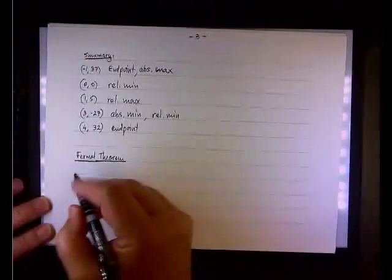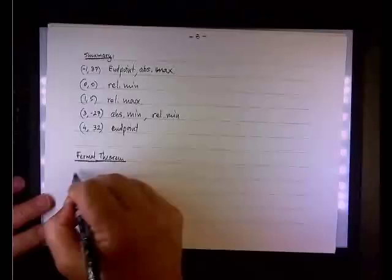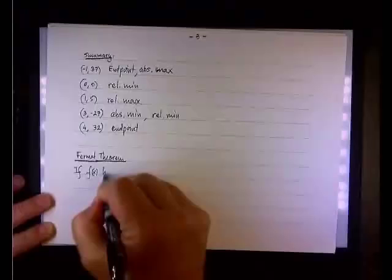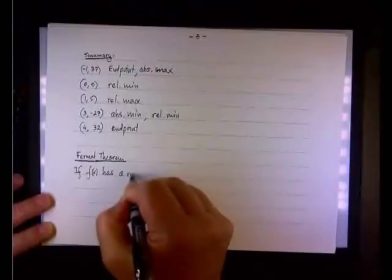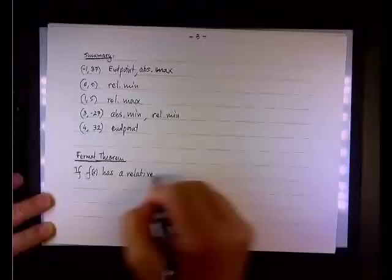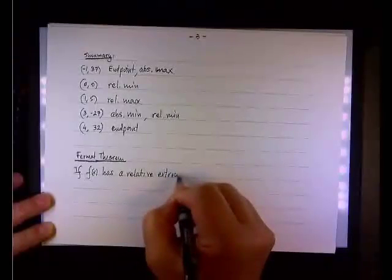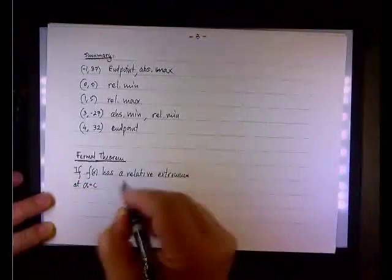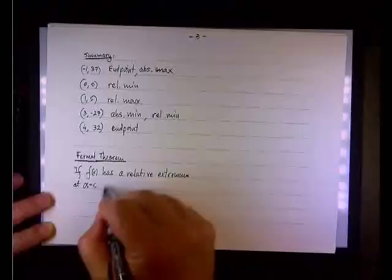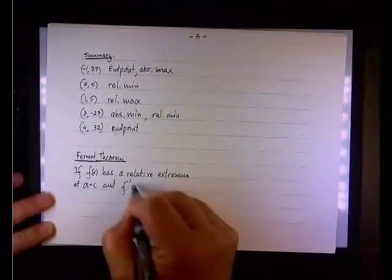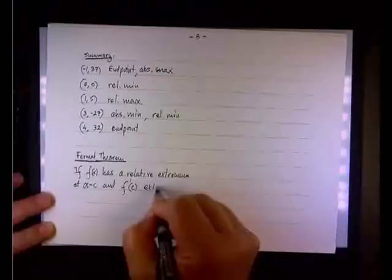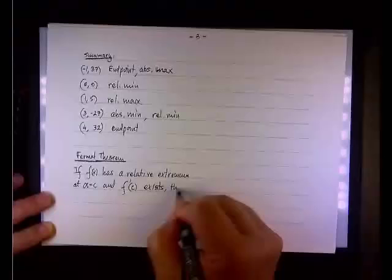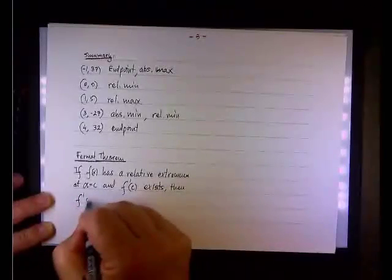And here is the theorem. He said that if f(x) has a relative extremum at x equals c, and f prime of c exists, kind of important addition, then f prime of c must equal zero.